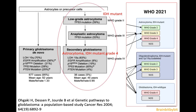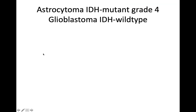The T2/FLAIR mismatch can also be used in glioblastomas. As shown in the scheme, the right side is the IDH mutant astrocytoma — the secondary glioblastoma has been renamed astrocytoma IDH mutant grade 4. We will discuss this one in combination with the glioblastoma next time.